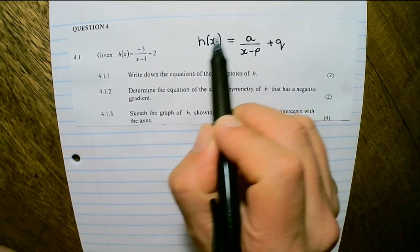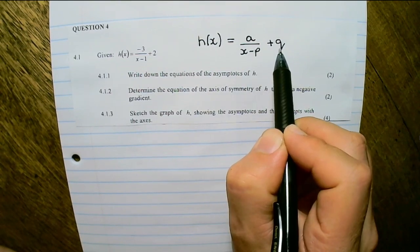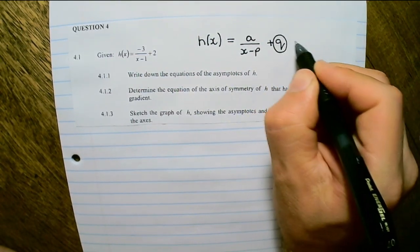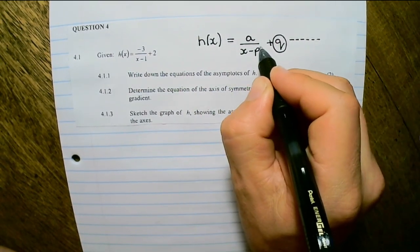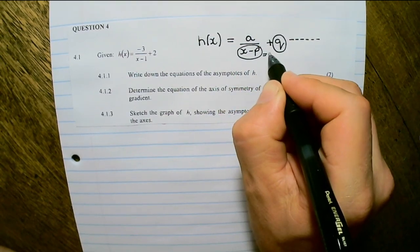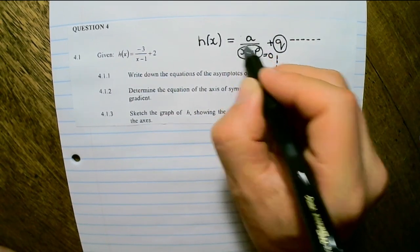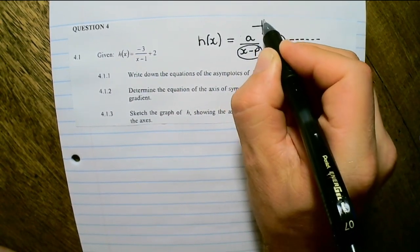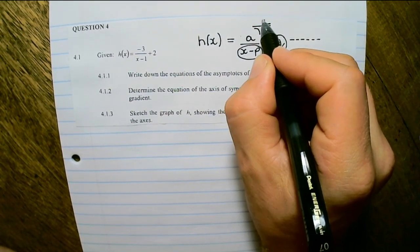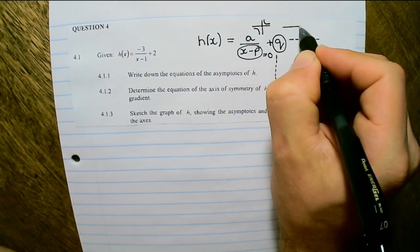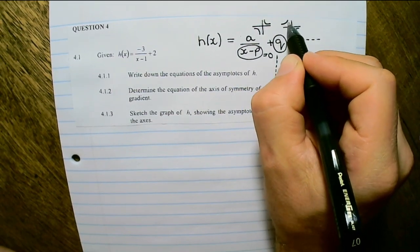The equation in its original format is H(x) equals A over x minus p plus Q. The Q value represents the horizontal asymptote, and x minus p equal to zero represents the vertical asymptote. The A value represents the quadrants — if A is positive the diagram is in quadrants 1 and 3, and if A is negative the diagram is in quadrants 2 and 4.